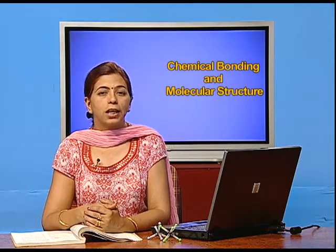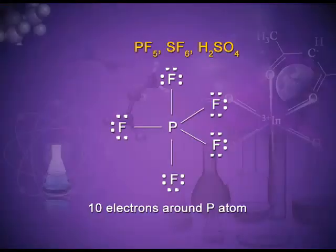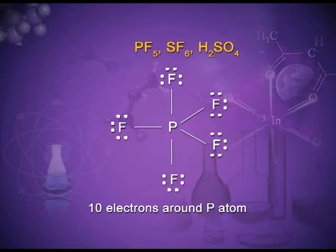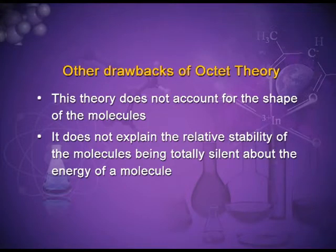Looking at the electron dot structures of these exceptions: in PF5 (phosphorus pentafluoride), phosphorus is in the center surrounded by five fluorine atoms. You can see the five covalent bonds around phosphorus — counting the electrons around phosphorus gives ten. Other drawbacks of the octet theory are that it does not account for the shape of molecules, and it does not explain the relative stability of molecules, being totally silent about the energy of a molecule.